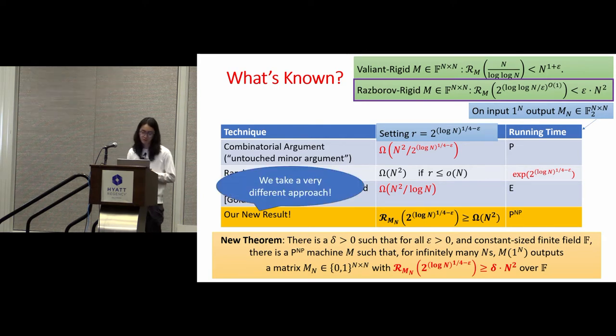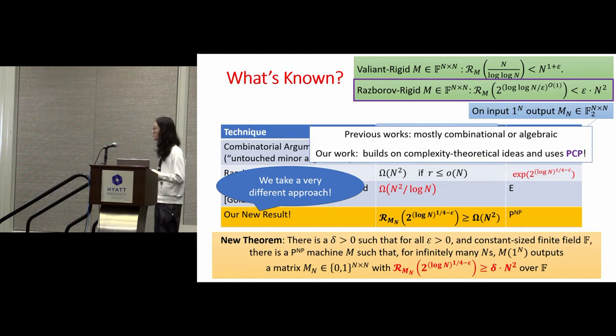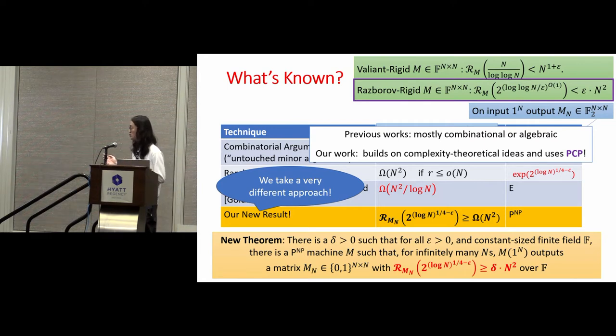Also, I want to remark that we take a very different approach from the previous works. Previously, people basically fixed their matrix and then used some combinatorial or algebraic method to prove the rigidity. But here, we actually first assumed that no construction works, and then we use some complexity theory ideas including PCPs to derive a contradiction. Then there must be some construction which works. So we're proved by contradiction.